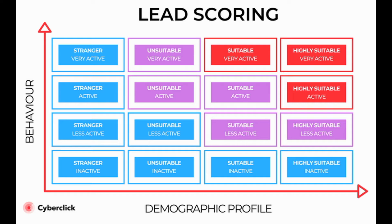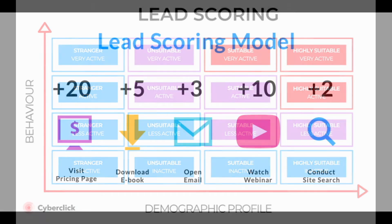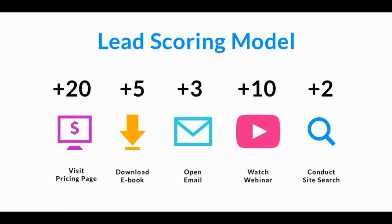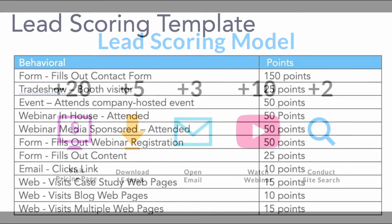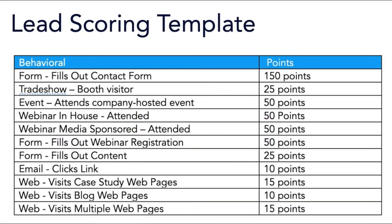Using the examples from above, you might give a lead a better score if they utilized one of your coupons, an action that would signify this person is interested in your product. The higher a lead's score, the closer they are to becoming a sales-qualified lead, which is only a step away from becoming a customer. The score and criteria is something you may need to change along the way, until you find the formula that works, but once you do, you'll transform your lead generation into customer generation.